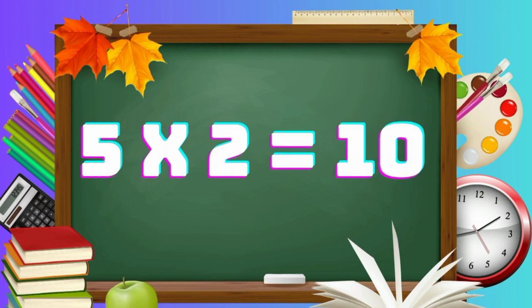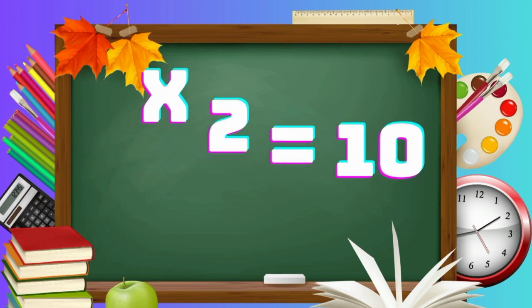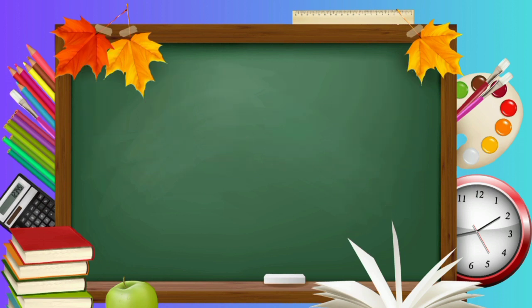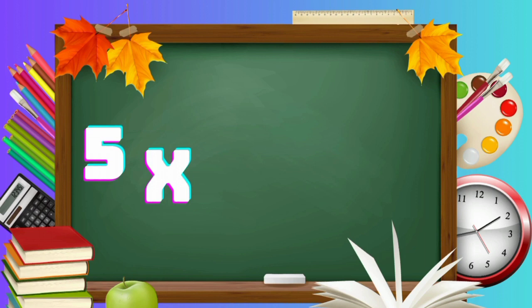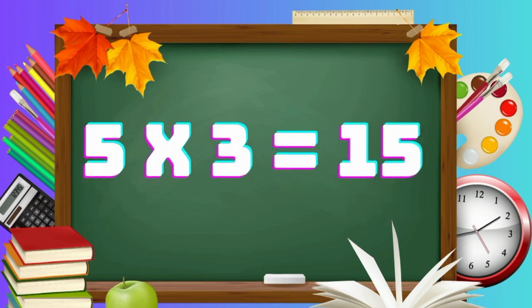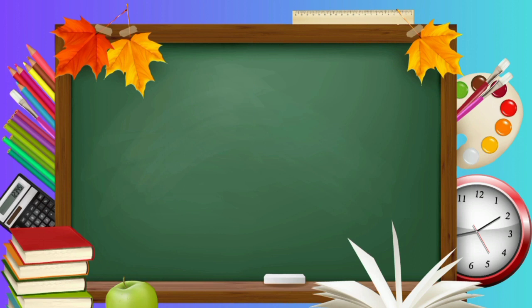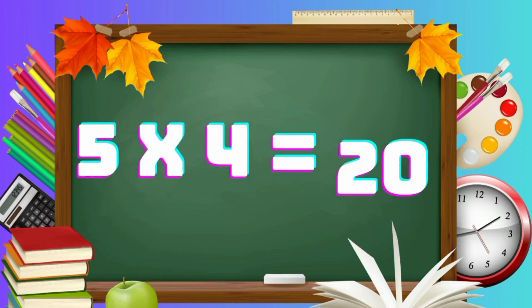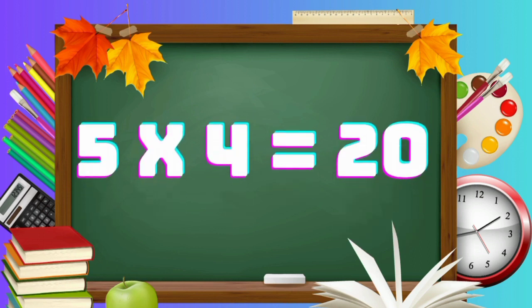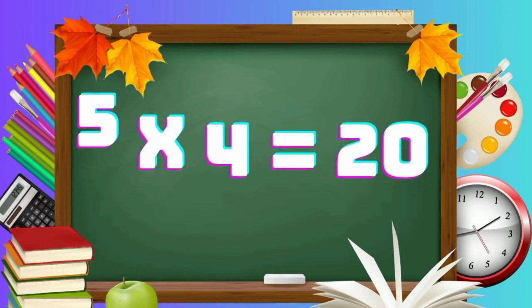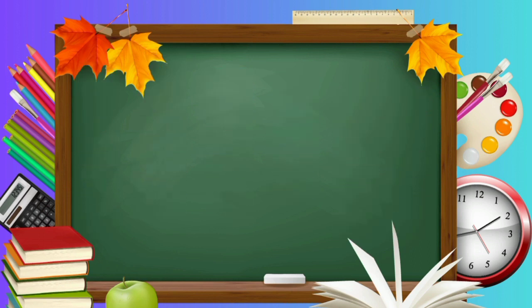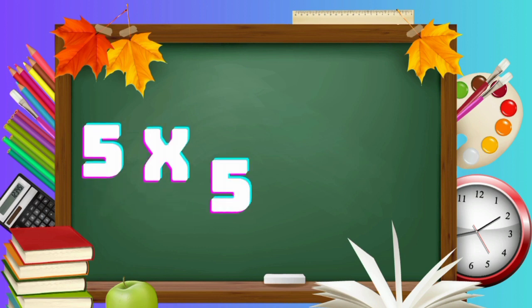5, 3's are 15. 5, 3's are 15. 5, 4's are 20. 5, 4's are 20. Five fives are twenty-five.